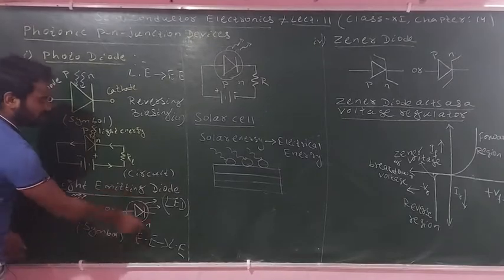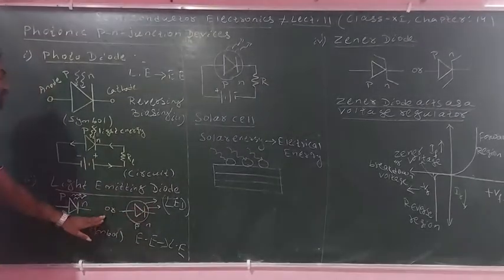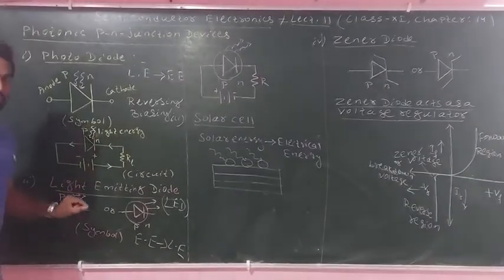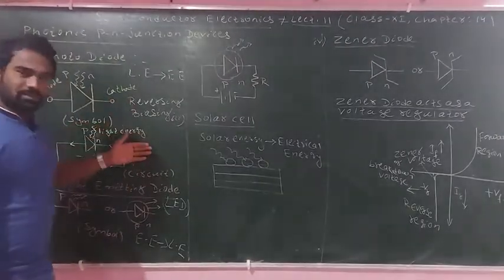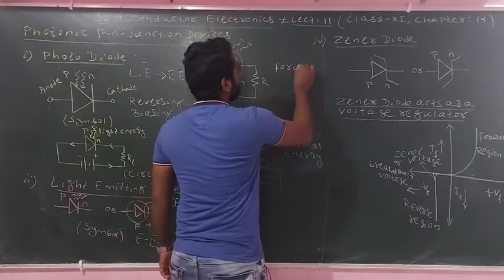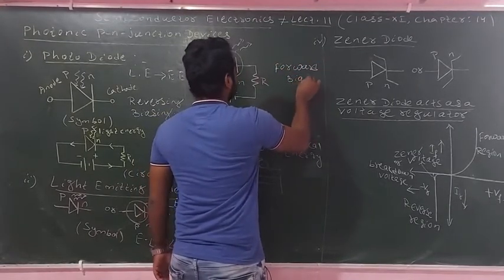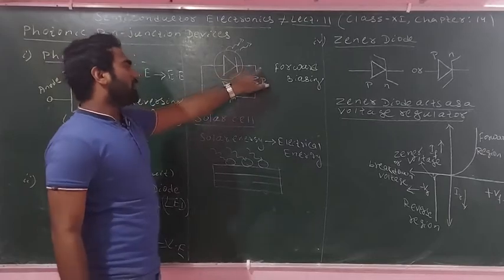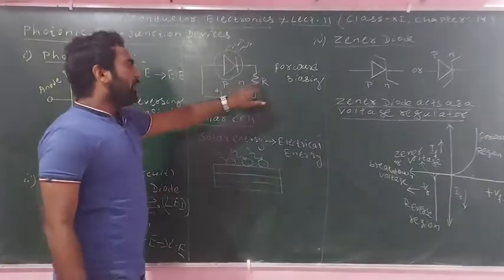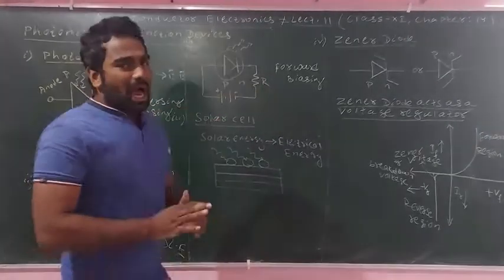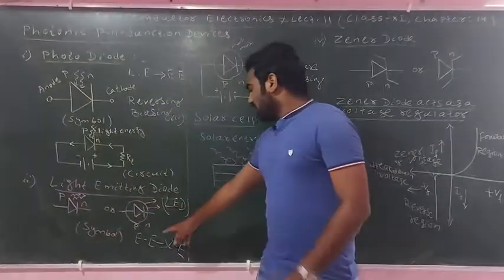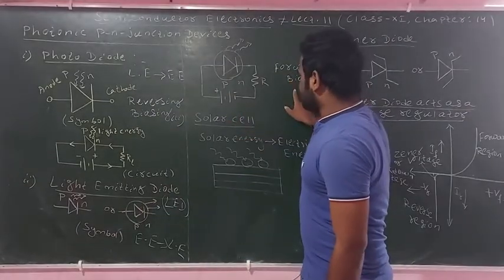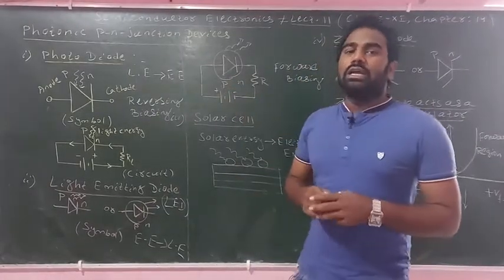This is the symbol of LED. The P-type semiconductor terminal is connected to the positive of the battery, and the N-type semiconductor terminal is connected to the negative. The output resistance is low. The LED converts electrical energy into light energy. It works on the principle of forward biasing. This is the circuit diagram.